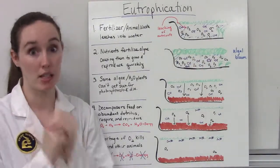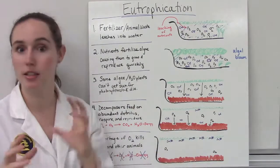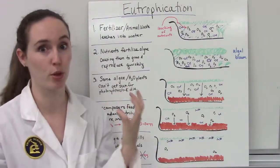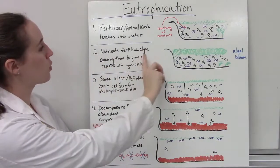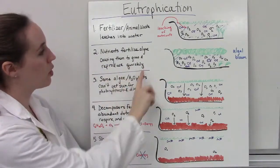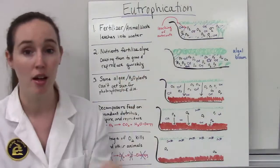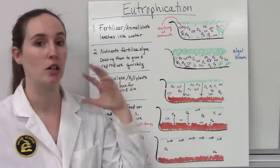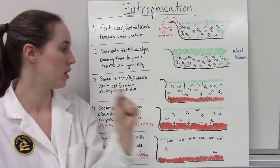Just like the plants on the farm, if algae get fertilized, they're going to grow and reproduce quickly. The nutrients will fertilize the algae causing them to grow and reproduce quickly. You can see the thicker mat of algae — that's called an algal bloom, when suddenly tons of algae grow all at once.